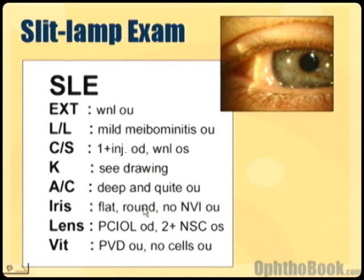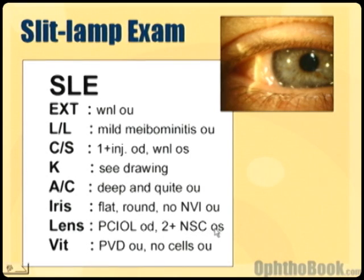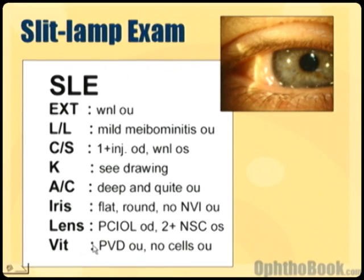Iris — you say it's flat and round with no neovascularization of the iris in both eyes. The lens — if it's clear just write clear in both eyes. However, if they have say a 2 plus nuclear sclerotic cataract in one eye, or a PCIOL which is a posterior chamber intraocular lens, you would write that here. VIT is short for vitreous and that's just behind the lens — here I'm just saying no cells.